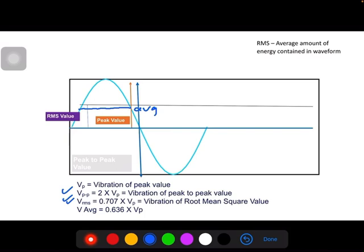V RMS is always 0.707 times V peak. V average is always 0.636 times V peak. It remains the same for any sine wave.